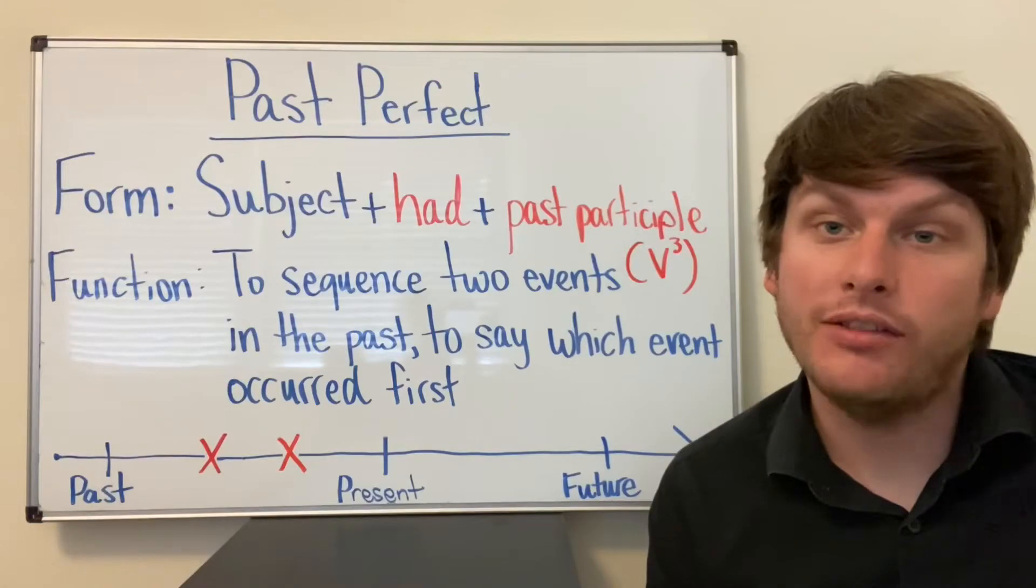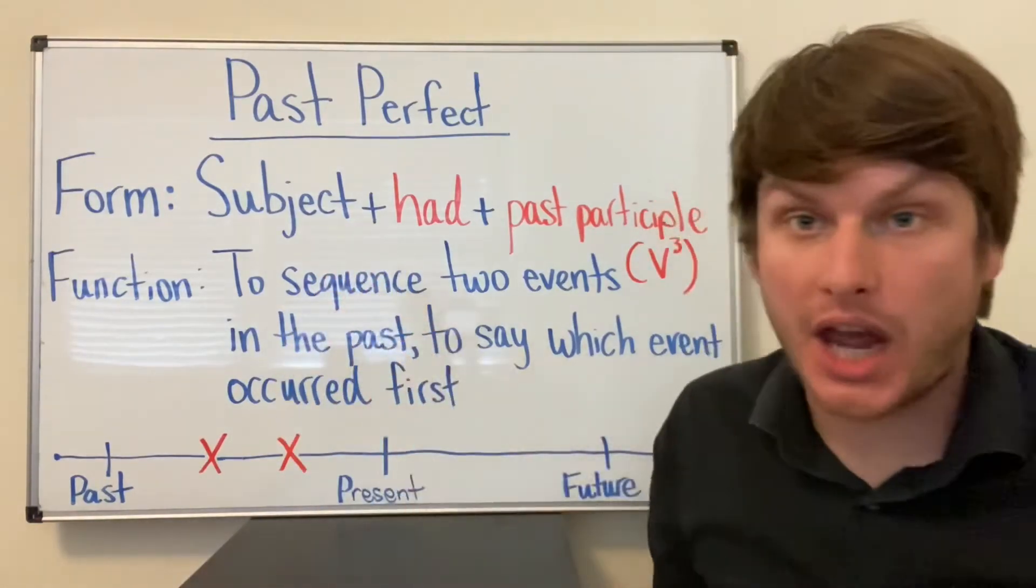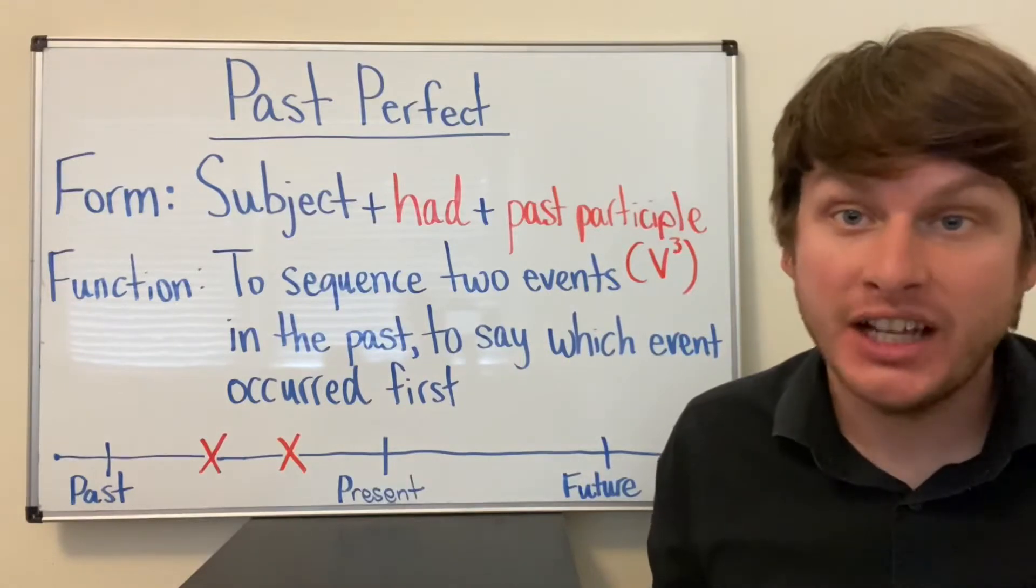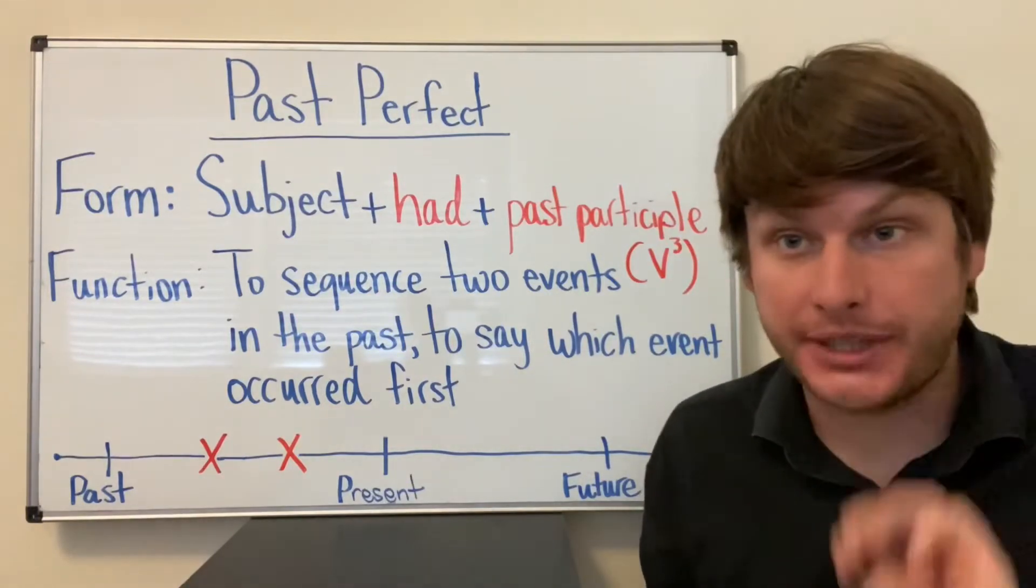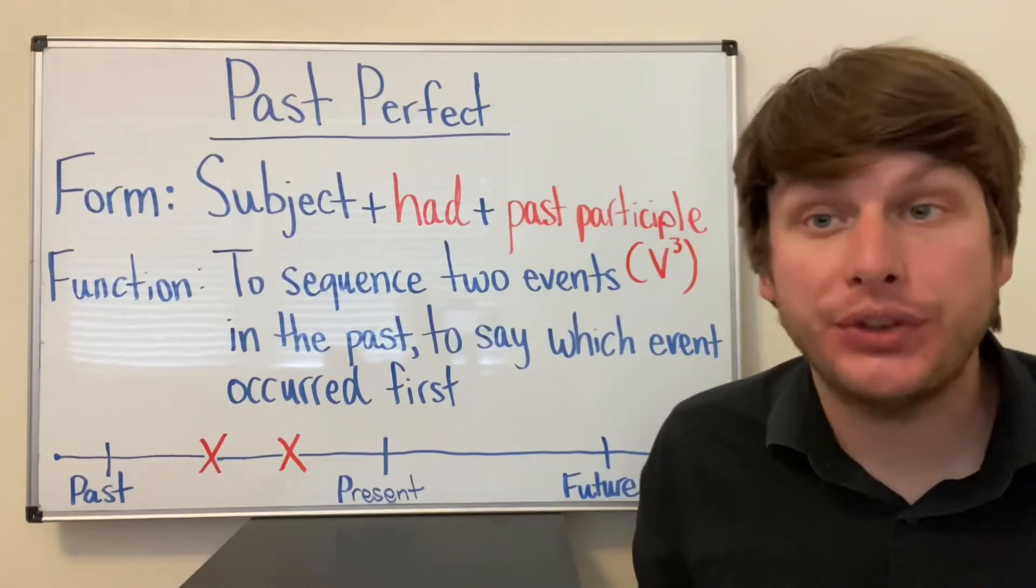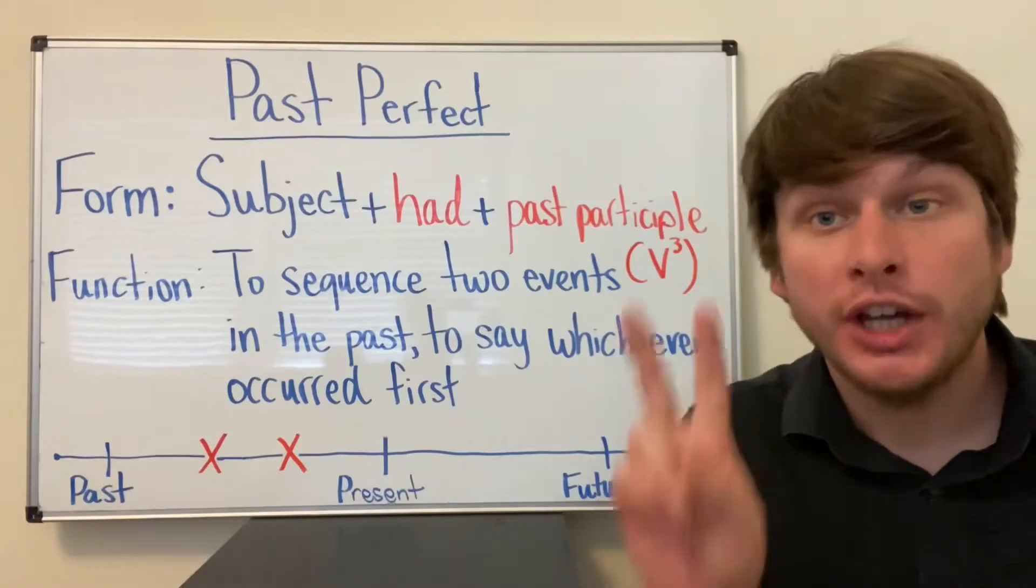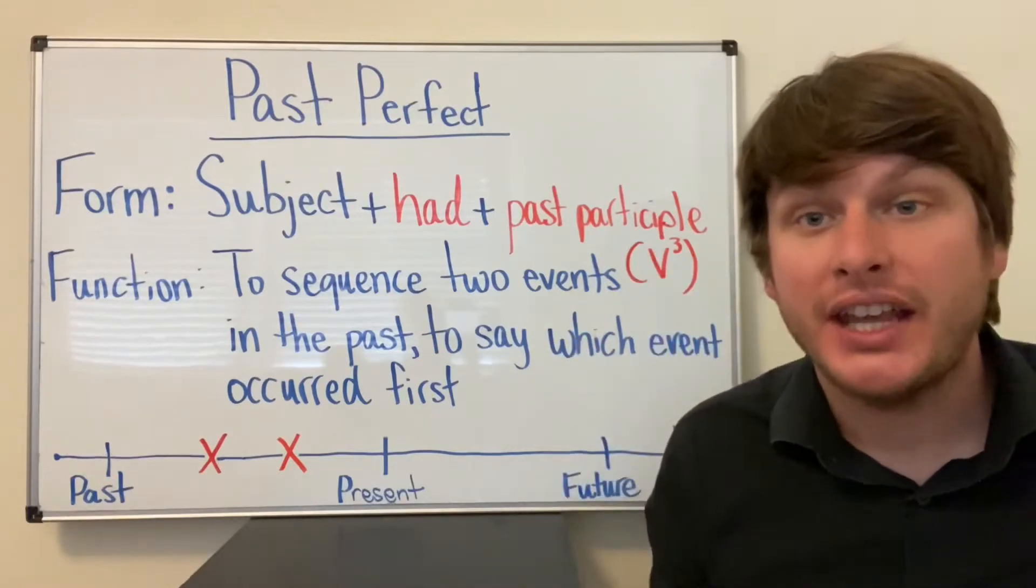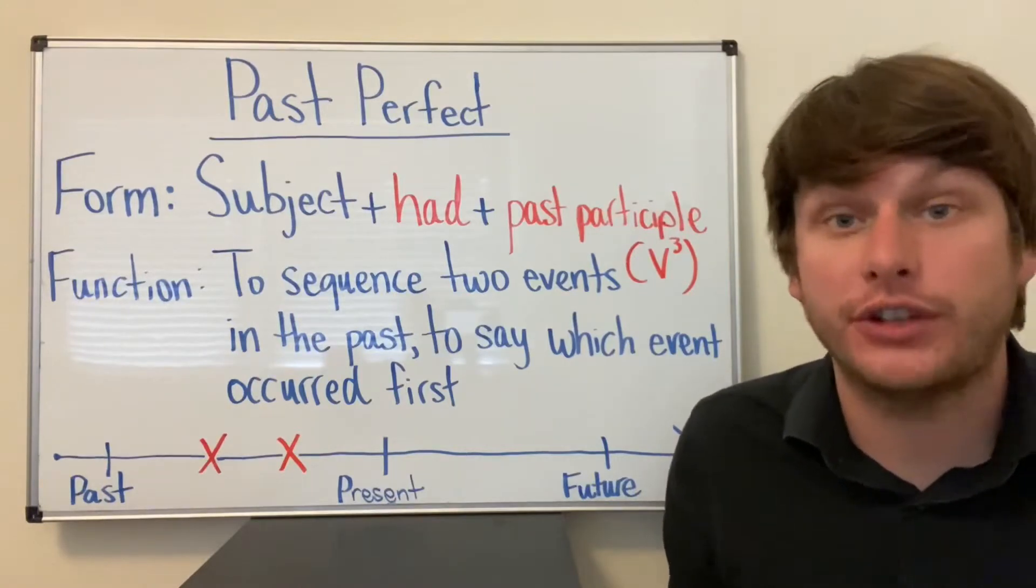The form of the Past Perfect is subject plus had plus past participle, verb three. We use the Past Perfect to sequence two events in the past to say which event occurred first.